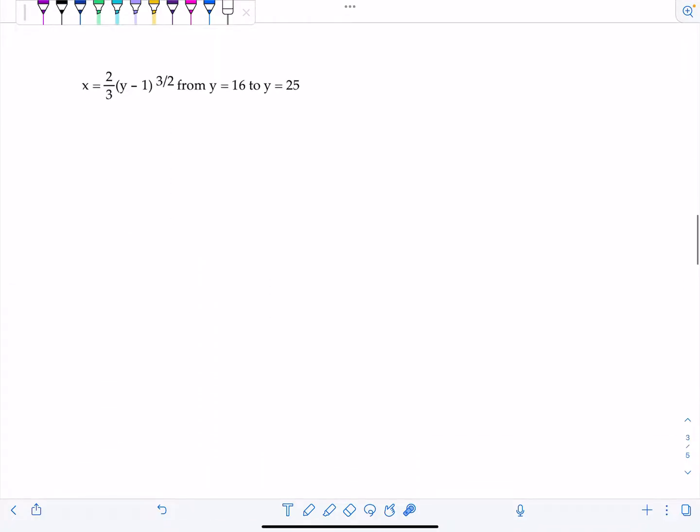I got another one for you. This time let's integrate with respect to y. So x equals two thirds times y minus one to the three halves. And we're going to find the arc length from y equals 16 to 25. So you can already see it's set up for us, x is a function of y. The limits are in terms of y. Why would you not want to integrate with respect to y?